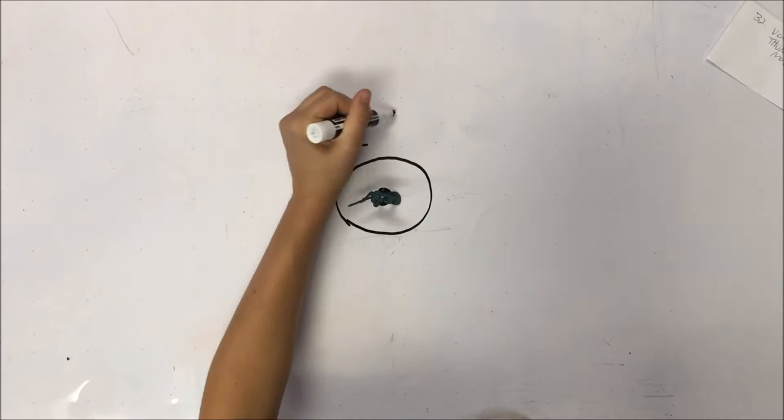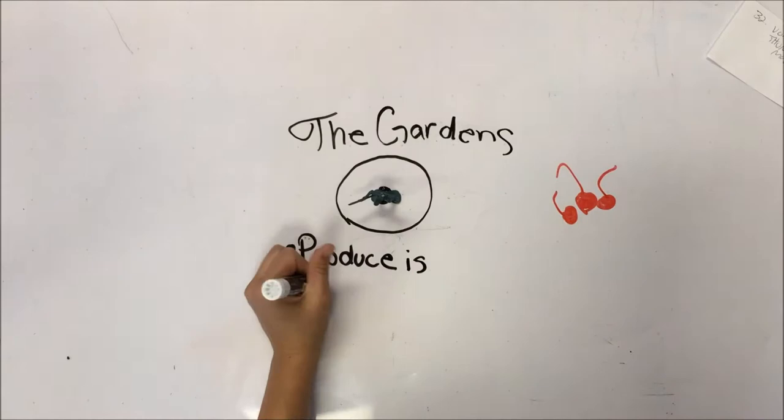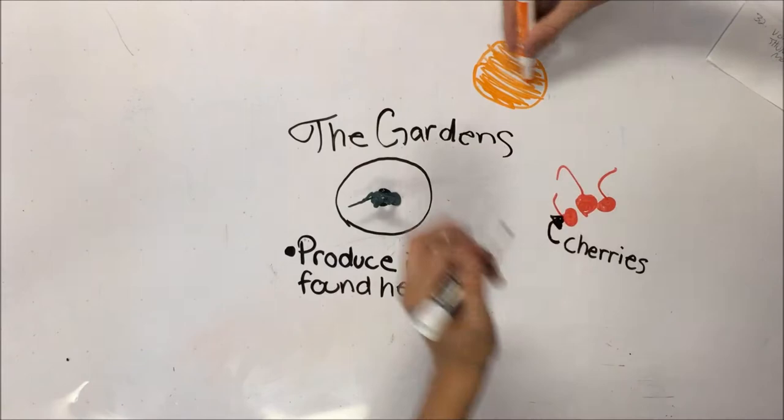Von Thunen's model started with the center. Nearest to the town, farmers produce perishable commodities and ask for high prices in products such as dairy and strawberries. A lot of effort went into the production of these goods due to the value of the land present in the city.